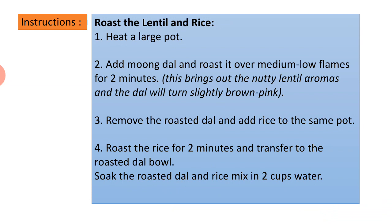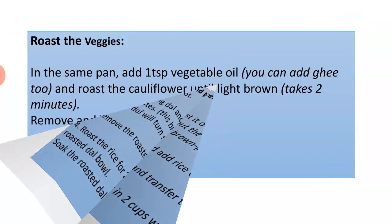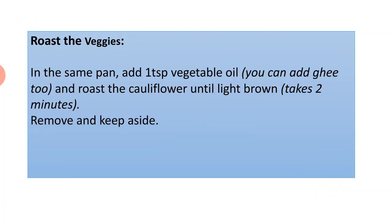Soak the roasted dal and rice mix in two cups of water. In the same pan, add one tablespoon vegetable oil — you can also add ghee — and roast the cauliflower until light brown, about two minutes. Remove and keep aside.